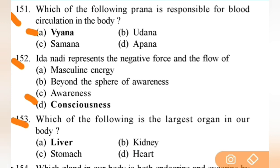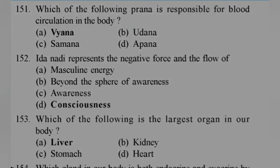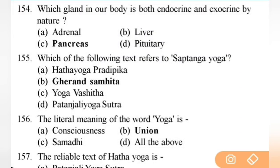Ida Nadi represents the negative force and the flow of — right answer is D — consciousness. Next: which of the following is the largest organ in our body? Right answer is A — liver. If liver is not in the options, the answer will be skin. Next: which gland in our body is both endocrine and exocrine by nature? Right answer is C — pancreas.